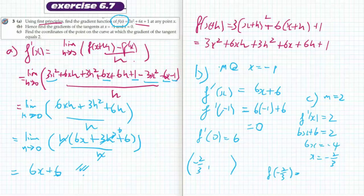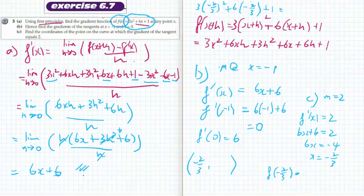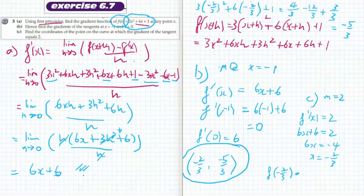The question asks where it is on the curve, so I need to find f of minus 2 thirds. Going back to the original function: 3 times minus 2 thirds squared plus 6 times minus 2 thirds plus 1. That gives 4 on 3 minus 12 on 3 plus 3 on 3, which equals minus 5 on 3. So the coordinates are minus 2 thirds, minus 5 on 3, where the gradient equals 2.